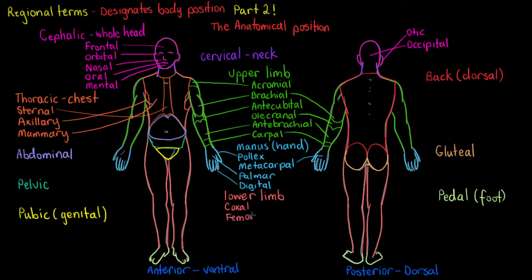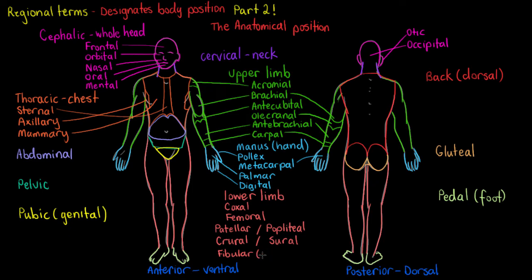For the lower limb we've got our coxal and femoral regions, and I'm also going to subdivide the lower limb into anterior and posterior aspects. On our anterior aspect we've got the patella, and on our posterior aspect we've got the popliteal. The coxal region is to the outer edge of where you'd find your pelvis. The femoral region is associated with mostly the top half of your legs just above your knees, and the popliteal region is the back of your leg — that one is the same for front and back.